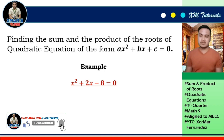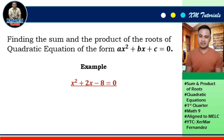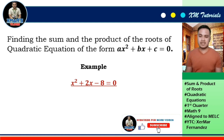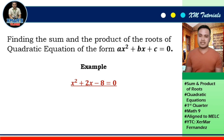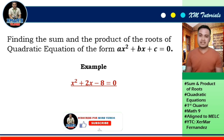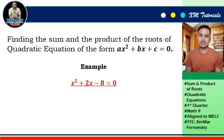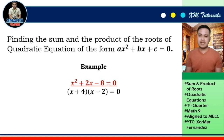I will factor x² + 2x - 8 = 0. The value of a equals 1 and c equals negative 8, so I will look for factors of negative 8 with a sum of 2. Since the value of c is negative, its factors have different signs, and the sign of the middle term goes to the factor with the higher absolute value. The factors are (x + 4)(x - 2) = 0.